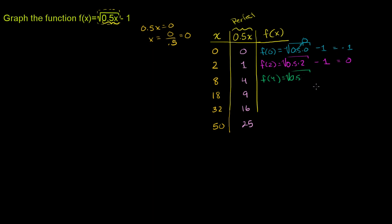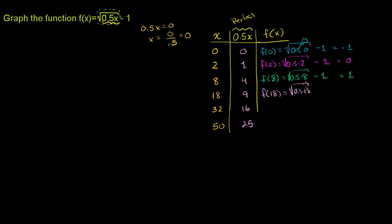f of 8 equals the square root of 0.5 times 8 minus 1. 0.5 times 8 is 4, and the principal root of 4 is 2, so 2 minus 1 equals 1. Then f of 18 equals the square root of 0.5 times 18 minus 1. 0.5 times 18 is 9, the square root is 3, so 3 minus 1 equals 2.